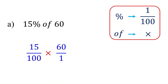60 and 100 have a common factor of 20. So 60 divided by 20 gives us 3, and 100 divided by 20 gives us 5. 15 and 5 have a common factor of 5. So 15 divided by 5 is 3, and 5 divided by 5 is 1.